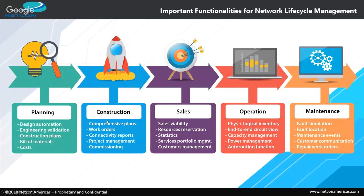In the construction phase, the field team needs comprehensive plans and work orders, connectivity reports showing how cables should be spliced and fibers connected, and capabilities to manage project implementation — knowing who is doing each activity, who is responsible, and when activities should take place. These are important features to ensure proper network construction. The data generated also enables network commissioning.